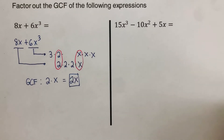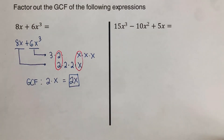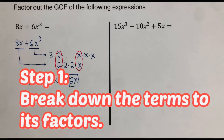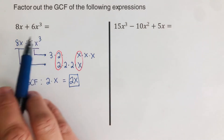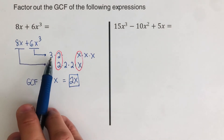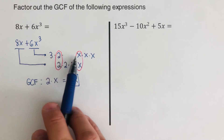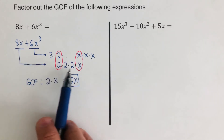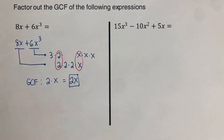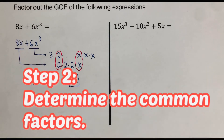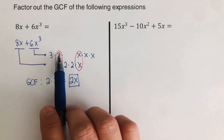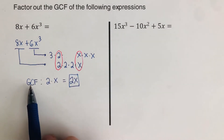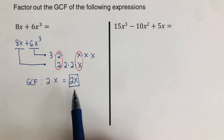Let's move on to the next example. I've already completed the first two steps. Step 1 was to break down 6x cubed and 8x into their factors. Step 2 was to determine the common factor: 2 and x are common to both, so the GCF is 2x.